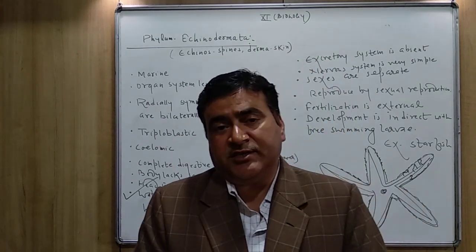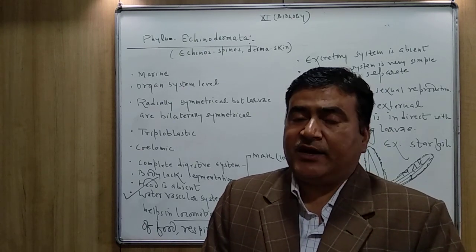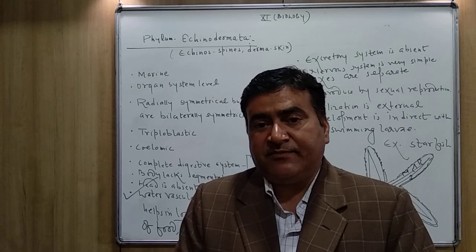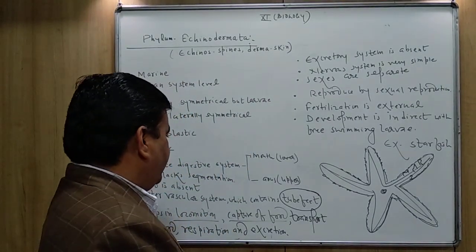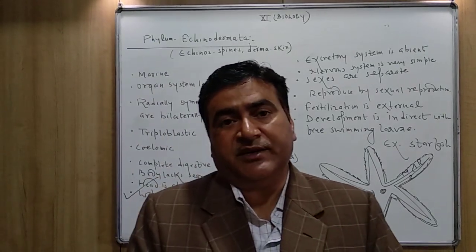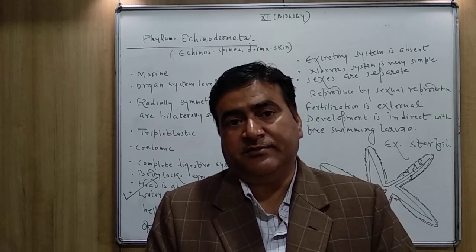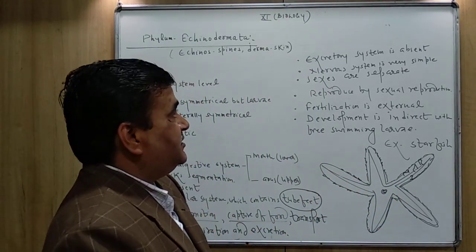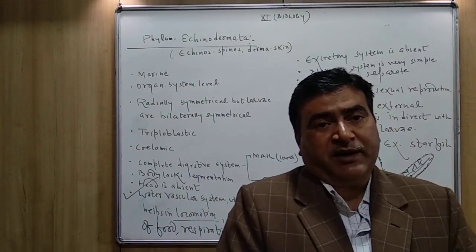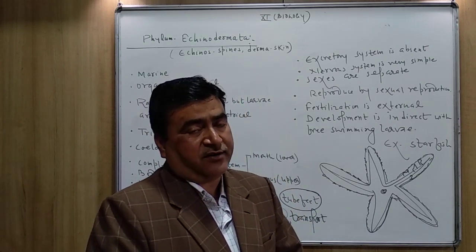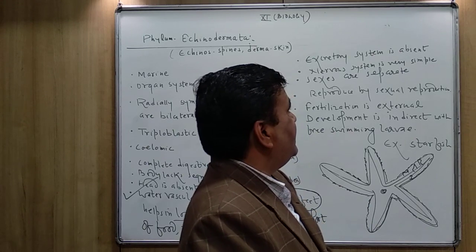The excretory system is absent in echinoderms. To discharge nitrogenous waste materials, the starfish and other members of Echinodermata don't have an excretory system — tube feet help to remove nitrogenous waste materials outside the body. They don't have a separate system to eliminate waste. The nervous system is also very simple; complex nervous system is absent. Some nerve ganglia are found at the center of the body and projected into all the arms.